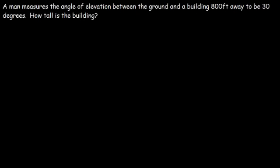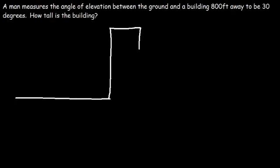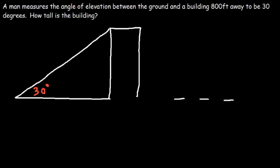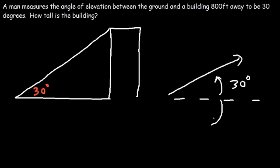The height of the man is irrelevant to the height of the building. Here's the ground and this is the building. With these problems, typically you need to draw a right triangle. Draw the line of sight from the ground to the building. The angle of elevation is the angle above the horizontal line. The angle of depression is the angle below the horizontal line — 40 would represent the angle of depression, 30 the angle of elevation.